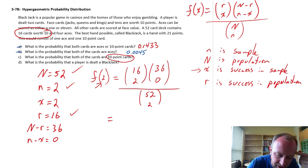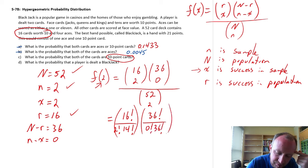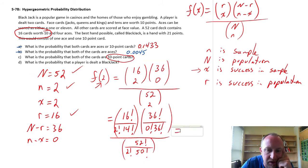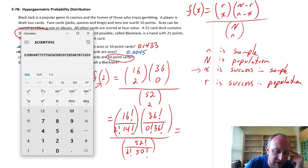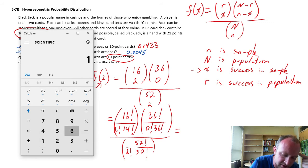So now if we rewrite this in our combinatorial notation, this is 16 factorial 2 and 14, times this is going to be 36 factorial, and this is 0 factorial 36, divided by 52 factorial, this is 2 and this is 50. Okay, so now we can just pull out our calculator and crunch some of these numbers. So 16, I'll look at the first term there first, 16 factorial divided by 2 factorial times 14 factorial.